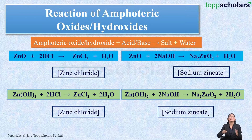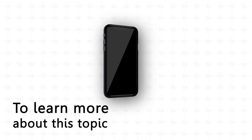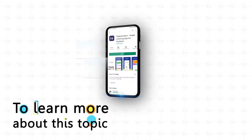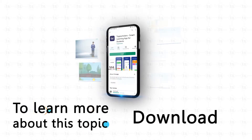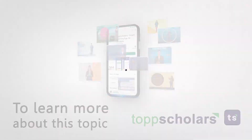Since zinc hydroxide has both acidic character as well as basic character, we say that zinc hydroxide is an amphoteric hydroxide. To learn more about this topic, download the Top Scholars app.